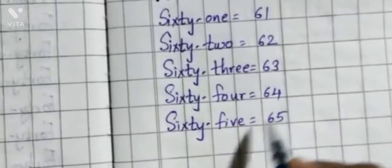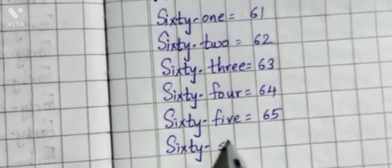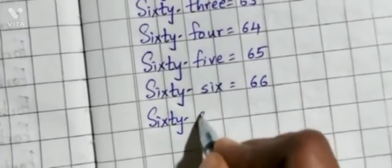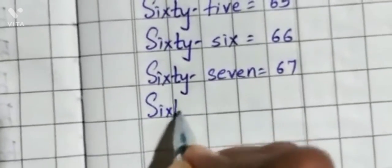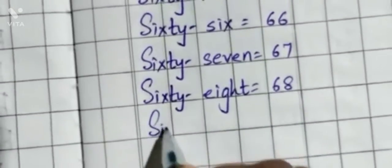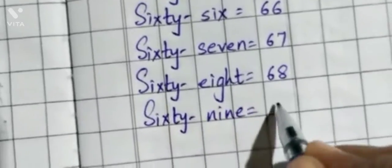S-I-X-T-Y-S-I-X, 66. S-I-X-T-Y-S-E-V-E-N, 67. S-I-X-T-Y-E-I-G-H-T, 68. S-I-X-T-Y-N-I-N-E, 69.